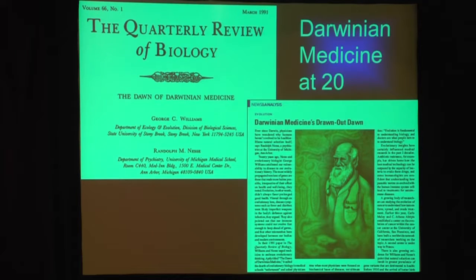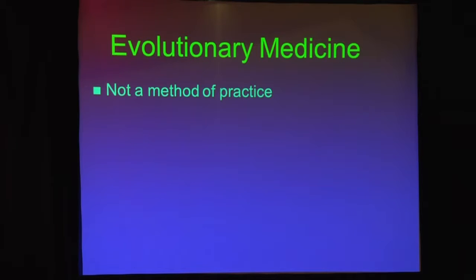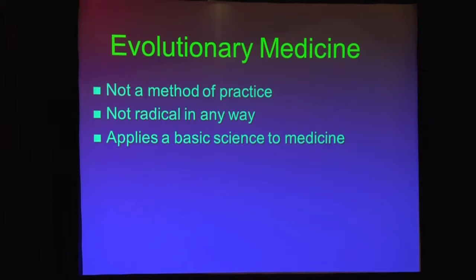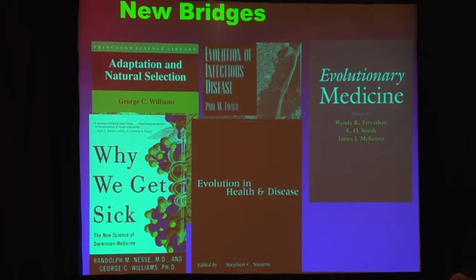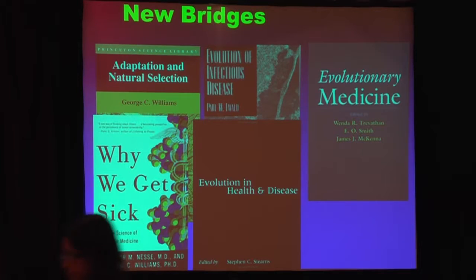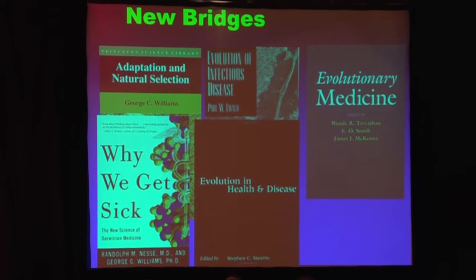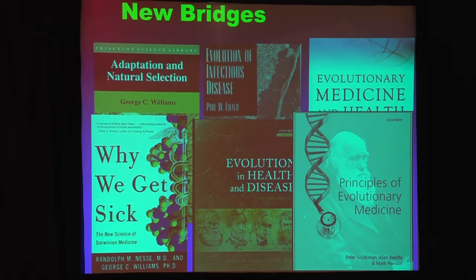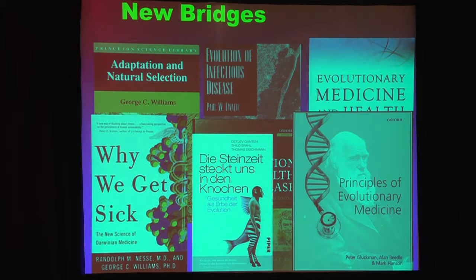Evolutionary medicine is not some special method of practice — it doesn't tell you how to practice, and there's nothing radical about it. It just applies a basic science to medicine, just like genetic medicine, except the basic science is evolutionary biology rather than genetics. This is the book George Williams and I wrote back in '94, and so many people have taken it up and tried to find new applications of evolution in medicine. There are edited volumes, anthropological perspectives, Oxford Press books — both in second editions — a brand new first textbook for the field that came out just two years ago, and even a book auf Deutsch for those who prefer reading in German.